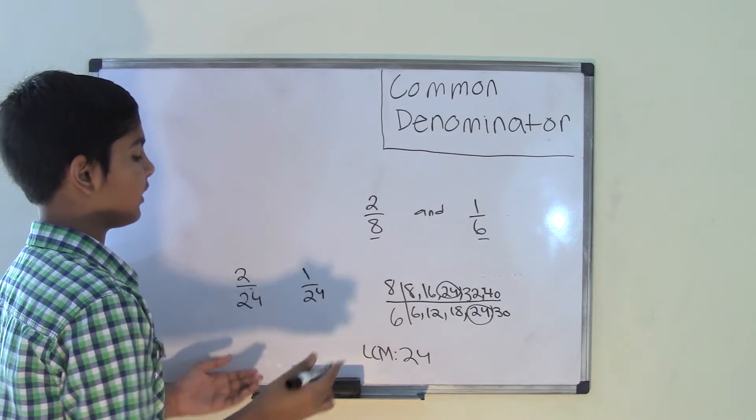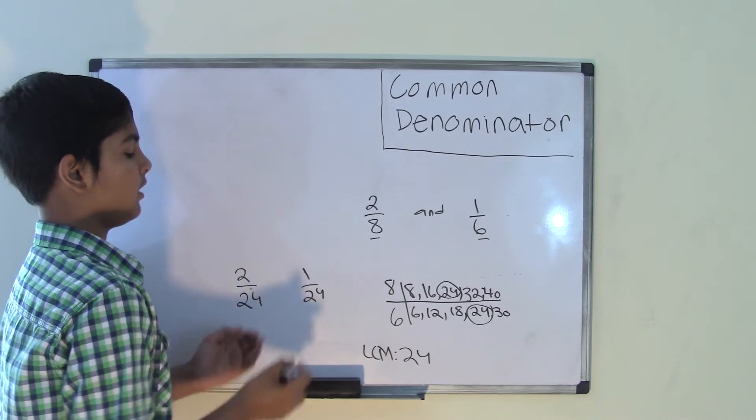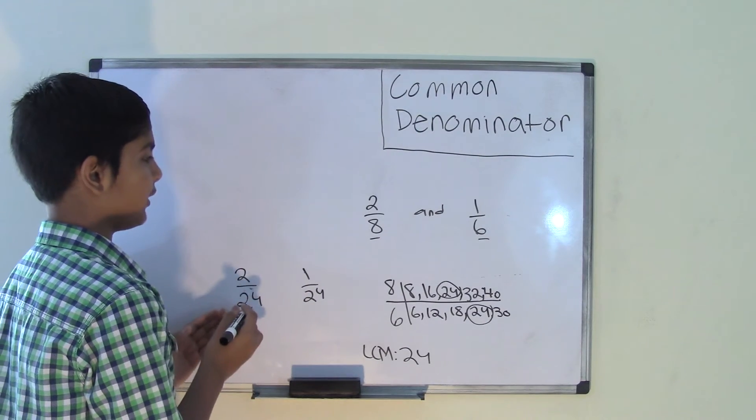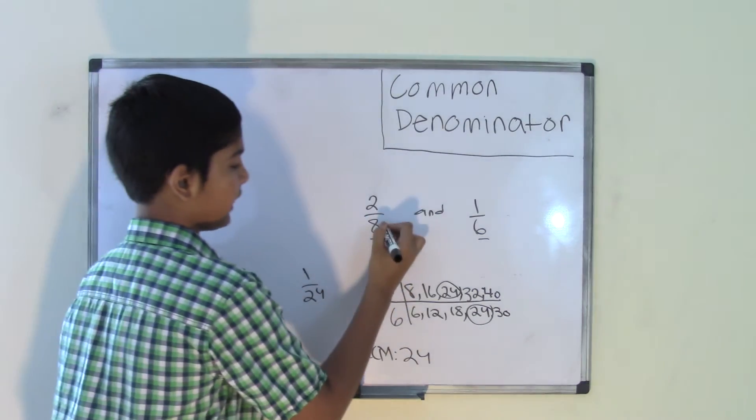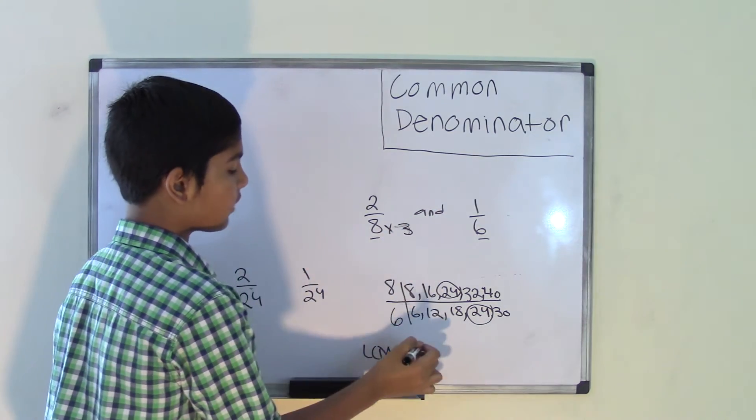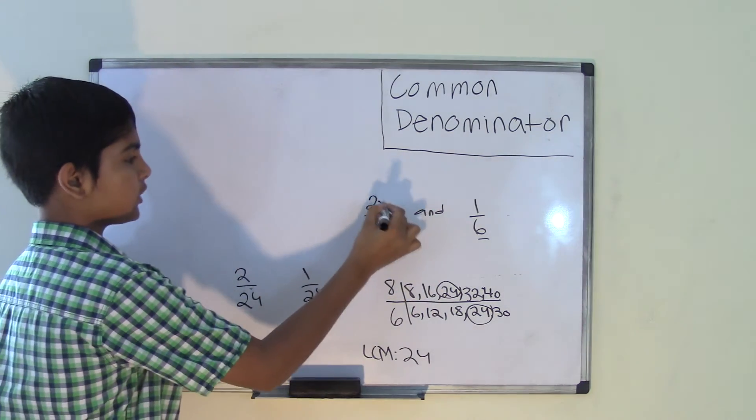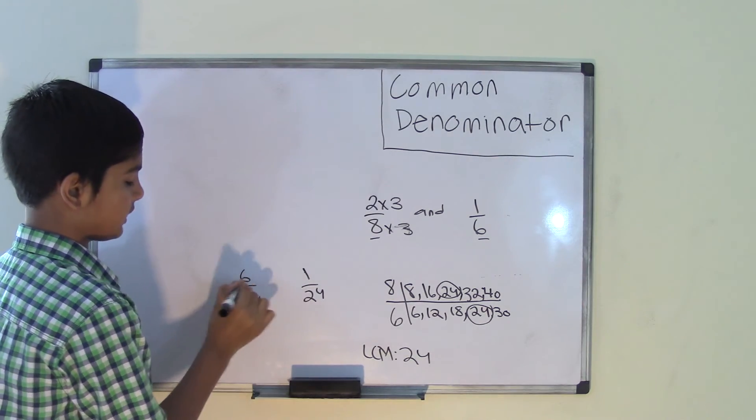But we also need to rename the numerators, which are 2 and 1, by multiplying the numerators by the numbers you multiply the denominators to get 24. So if 8 times 3 is 24, then we multiply 2 times 3. And we know that 2 times 3 is 6.